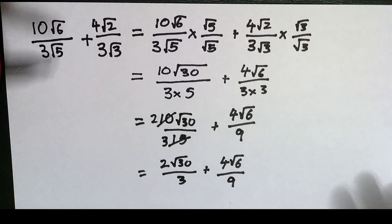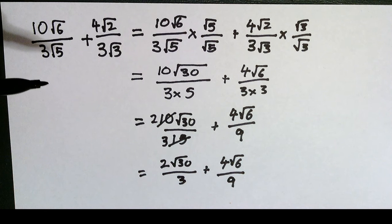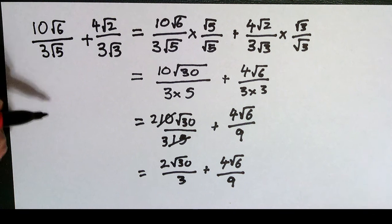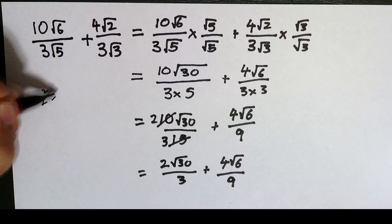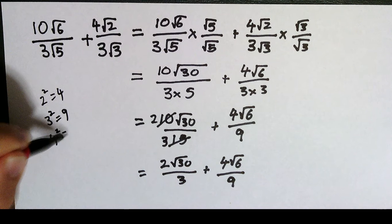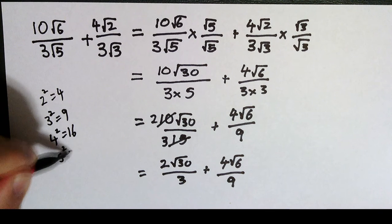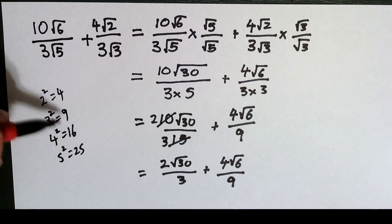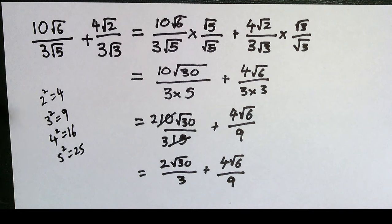Now, I see the root 30 and I think to myself square numbers, square numbers, square numbers. Are there any square numbers that go into 30? Well, remember what the square numbers were: 2 squared was 4, 3 squared was 9, 4 squared was 16, 5 squared was 25. None of these numbers go evenly into 30, so I can't simplify the root 30 there.